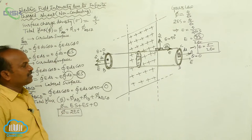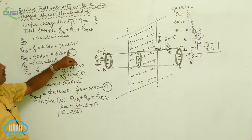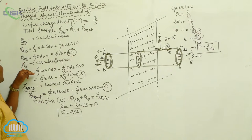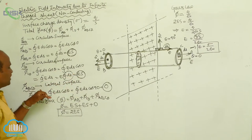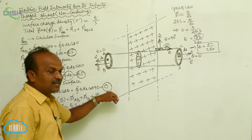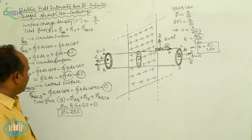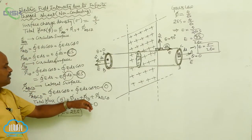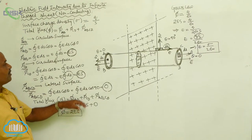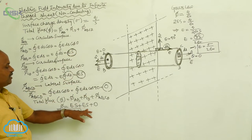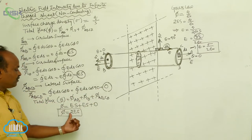We calculate the flux through each surface. Flux passing through circular surface AB equals ES. Flux passing through circular surface CD also equals ES. Flux passing through the lateral surface ABCD is 0. Therefore, total flux through the cylinder equals 2ES.